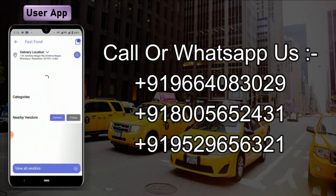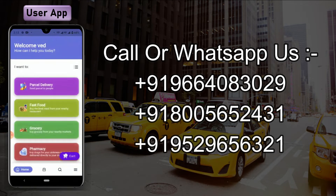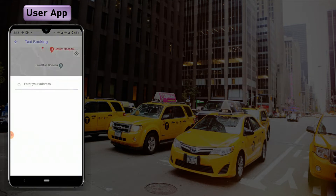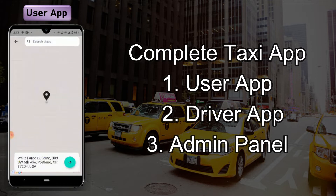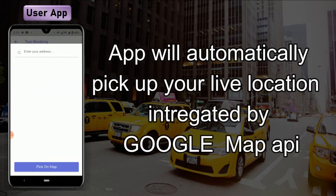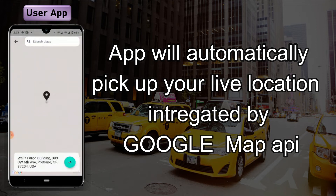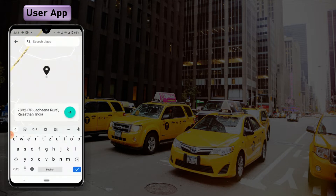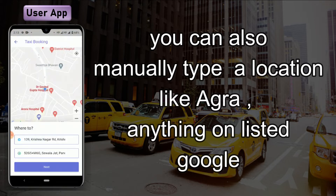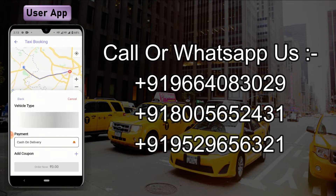This is the GOPEC app. Now click on taxi booking. You need to choose your pickup and your drop address. Click on 'pick on map' and it will automatically take your live location. You can also type a particular location — right now we are entering Agra as the address. That's how the location feature works in the GOPEC application.